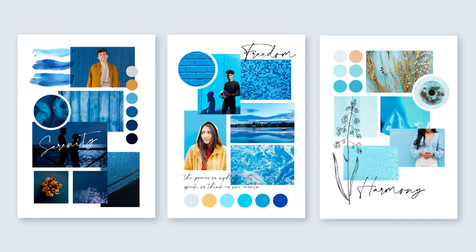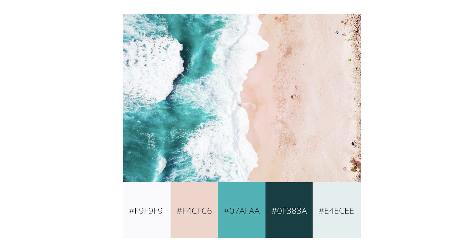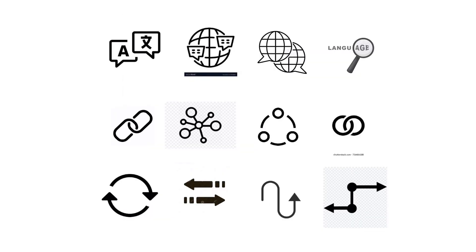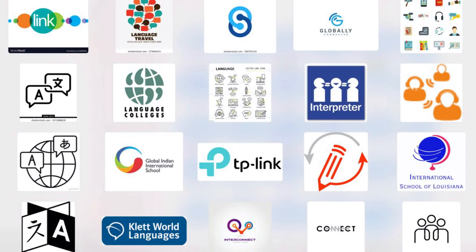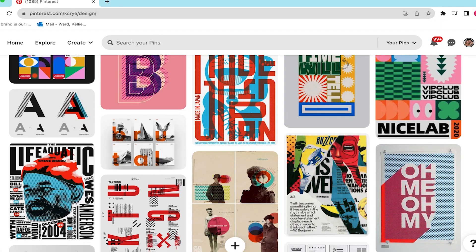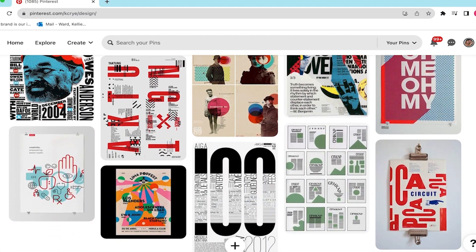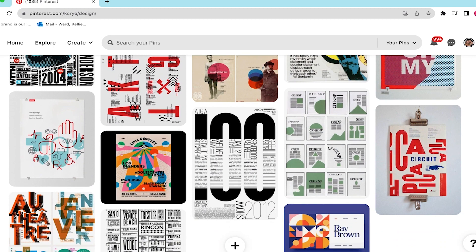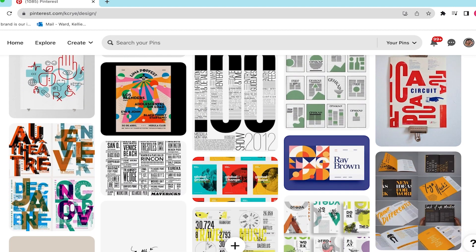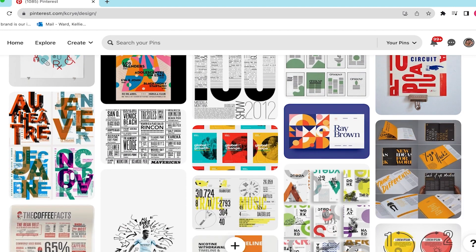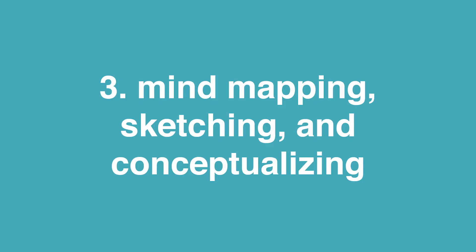The other kind of research is visual research. This step is where you look for design inspiration, gather photos, images, and icons. I love to get design ideas from websites like Pinterest, Behance, and Dribbble, and look at what other designers are doing on similar projects.